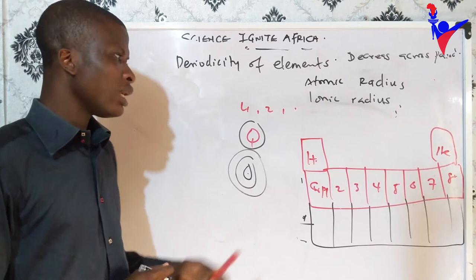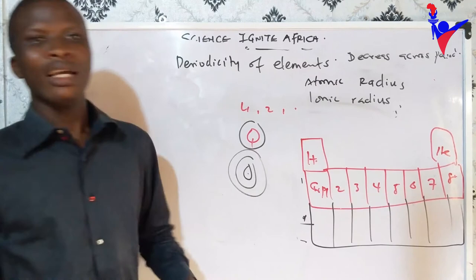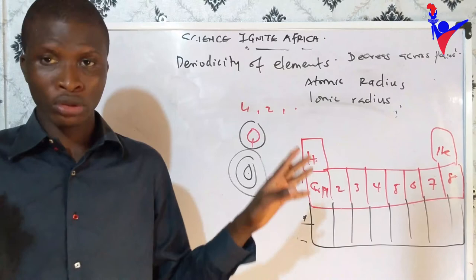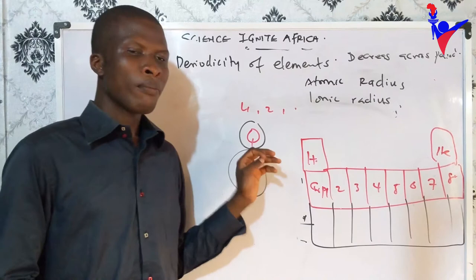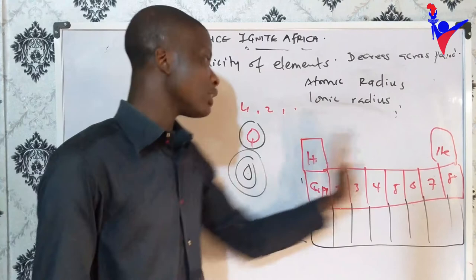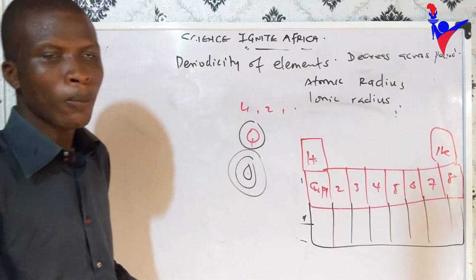Electropositivity, also called metallicity, is the tendency of an atom to lose an electron. It is a property mostly peculiar to metals — such as lithium, beryllium, sodium, magnesium, potassium, and aluminum. As you move across the period, electropositivity decreases across the period.